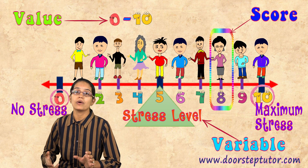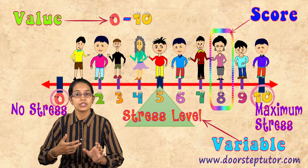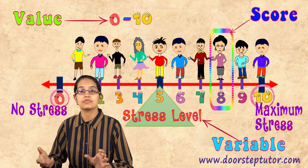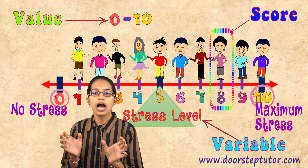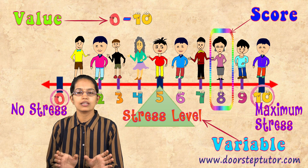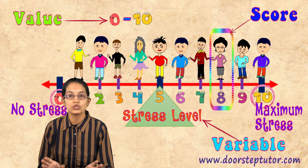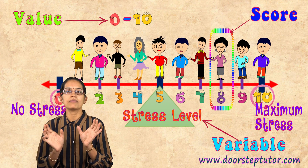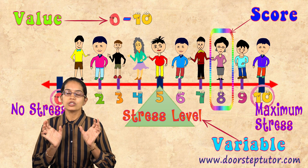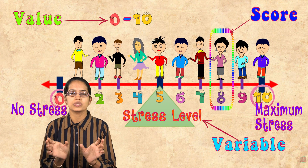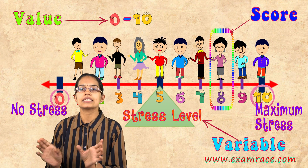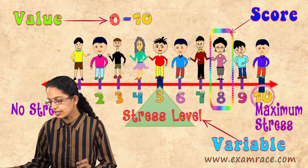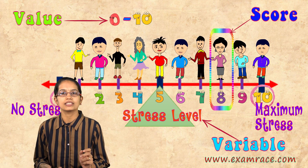When we talk about the frequency table and the frequency polygon later on, we understand how variables, values and scores are placed — because most students get confused in arranging these values and variables.